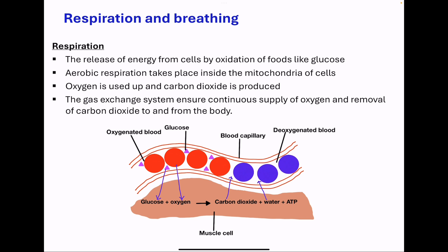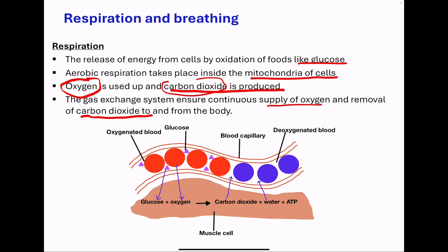Respiration is a process of release of energy from cells by oxidation of foods like glucose. In animals, aerobic respiration takes place inside the mitochondria, or in eukaryotes. In this process, oxygen is going to be used up and carbon dioxide is going to be produced. So this oxygen required has to be supplied, while the carbon dioxide produced has to be taken away. So a gas exchange system is going to ensure the continuous supply of oxygen, as well as the removal of carbon dioxide from the body, so that body processes can go on smoothly.